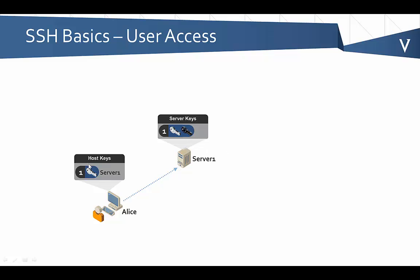What happens now is that a copy of that public key is stored with the address of that server, so the next time we connect we don't get prompted and always trust that it's Server 1. If an attacker had gotten in the middle of that situation, that would be an issue. This key pair enables Alice to identify the server each time, and it ultimately facilitates setting up encryption between Alice's workstation and the server. Once the connection is made, she'll be prompted for her username and password.